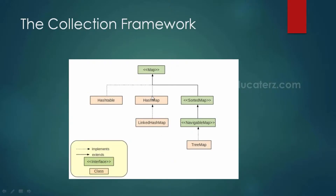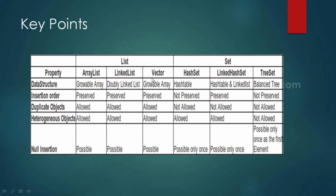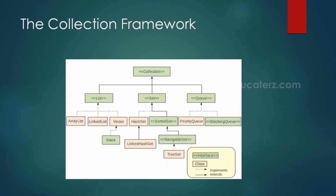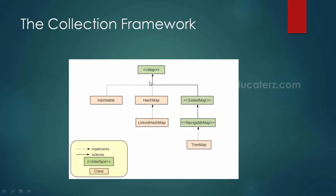Looking at the full collection framework structure, under Collection we have List, Set, and Queue. Nowadays people mostly use List and Set. We also have a Map interface, which is not a sub-interface of Collection because Map holds objects in key-value pairs, whereas Collection holds objects as a single entity. Under Map we have Hashtable, HashMap, and LinkedHashMap classes. SortedMap is a sub-interface of Map, under which TreeMap is a class.